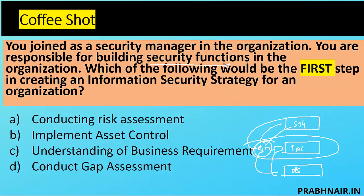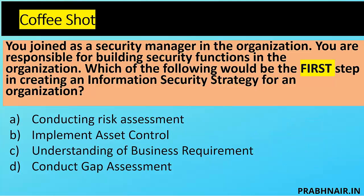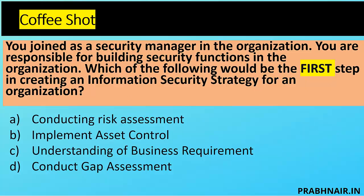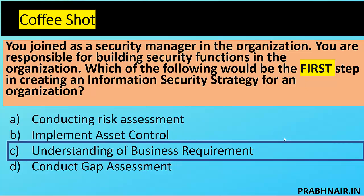In this question: they are building a security function (present tense), the question talks about the first step, and they are in the process of creating a strategy not yet created. The sequence is: vision/mission → business requirements (including legal, regulatory, customer) → information security strategy → information security policy → information security program. The closest answer is C, understanding business requirements, because without that you cannot proceed to D, B, or A.